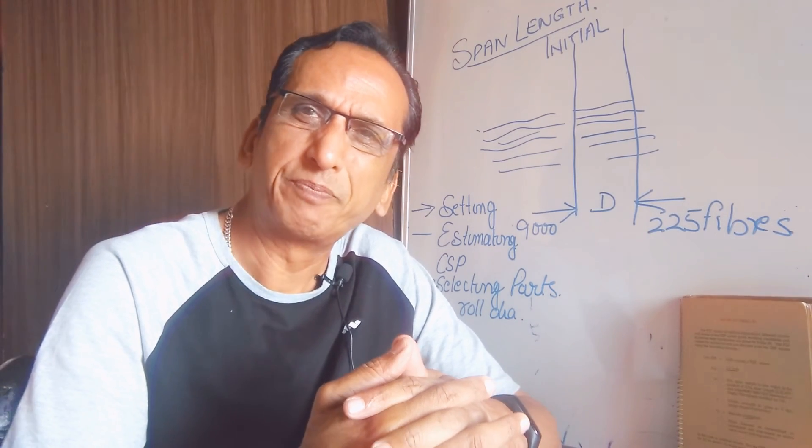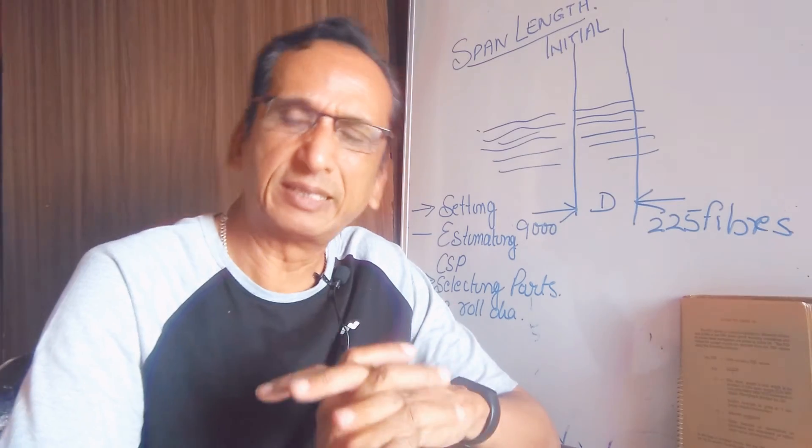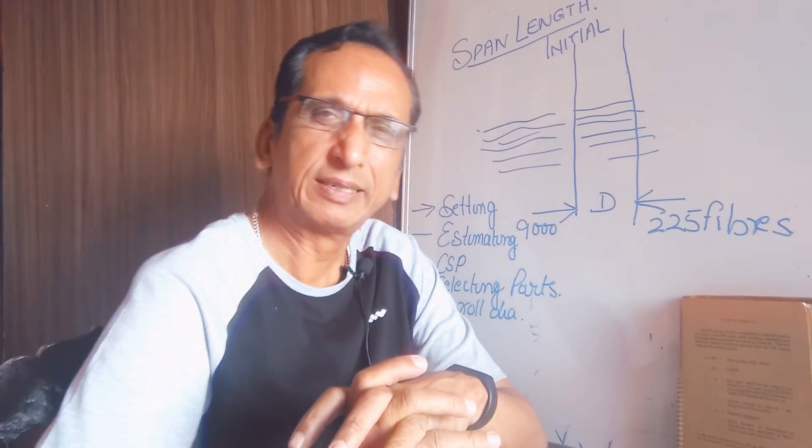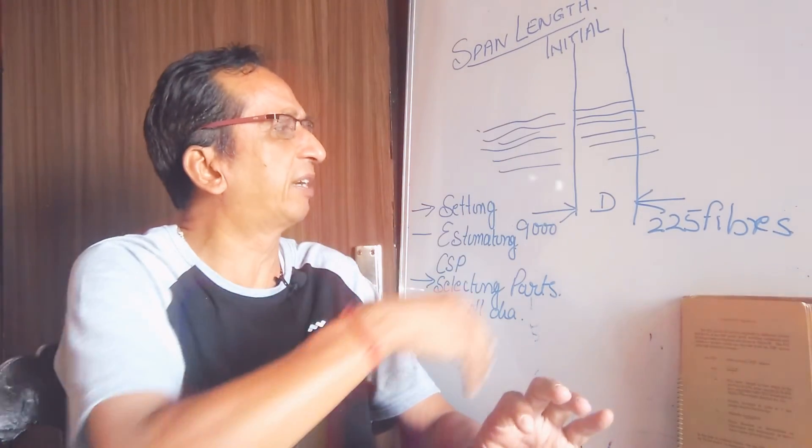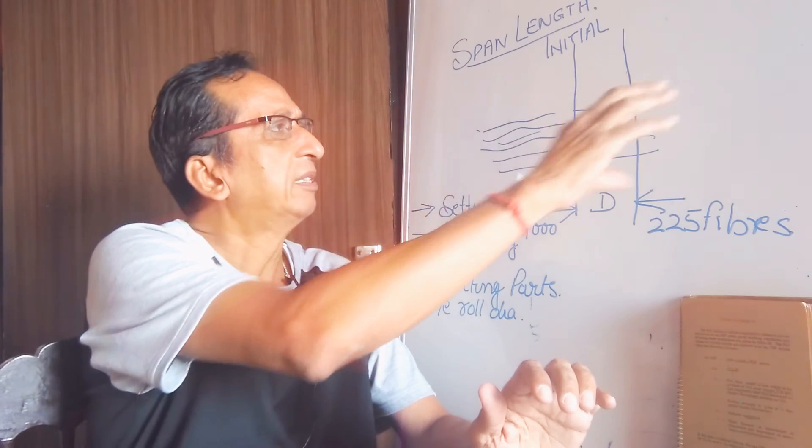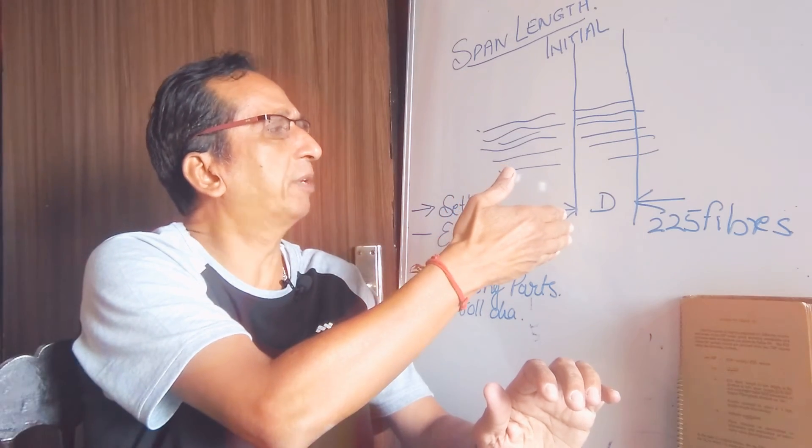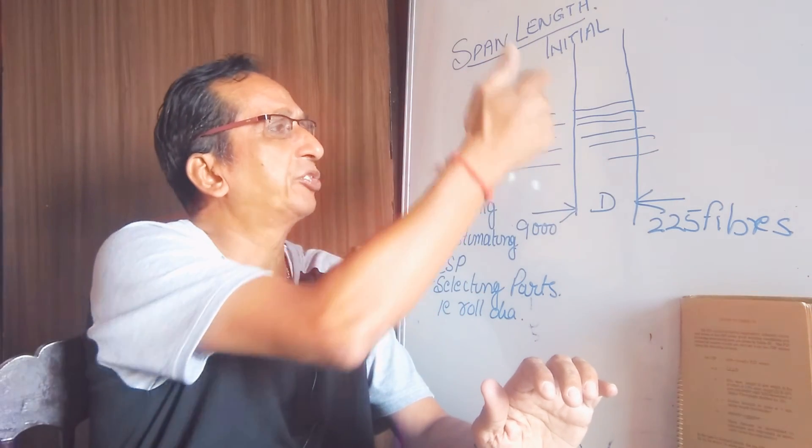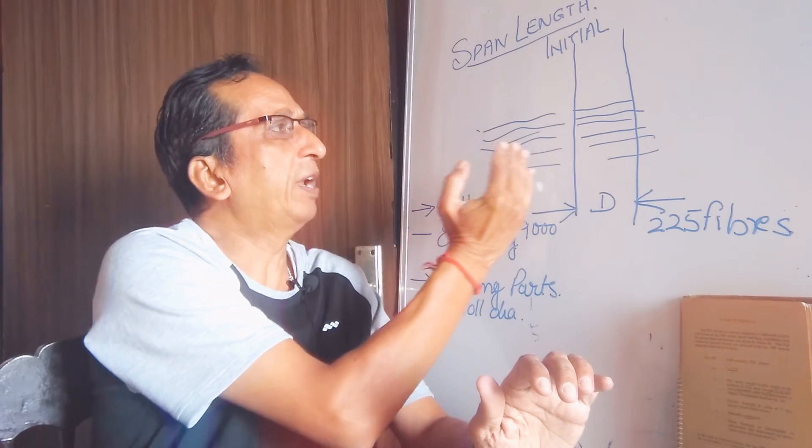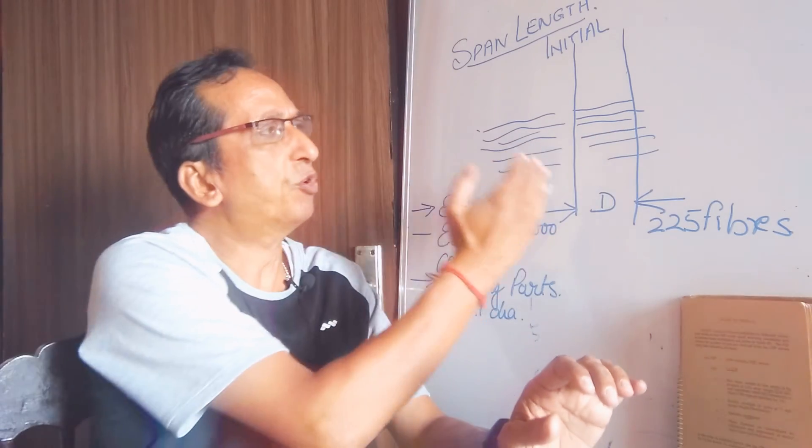As clear in the diagram, if 9000 fibers are present at the initial stage and when it is moved towards the right hand side, and when the 225 fibers are present in that particular line...